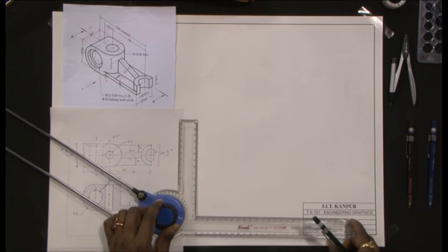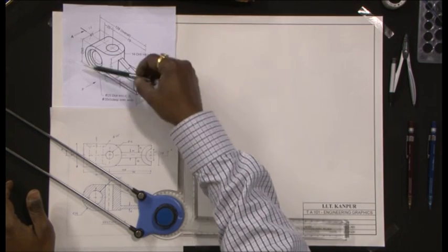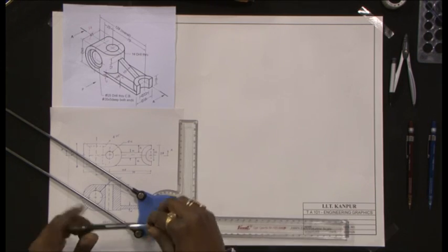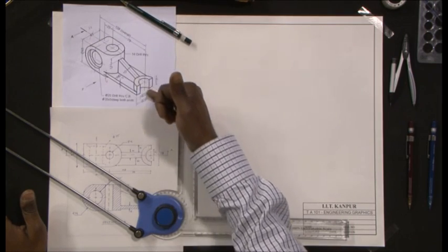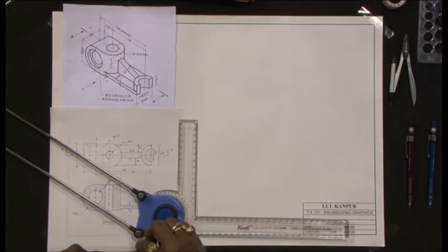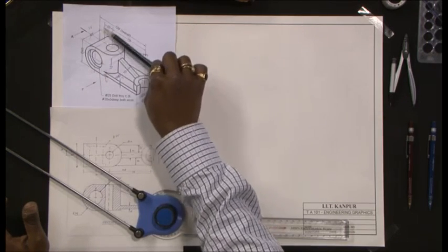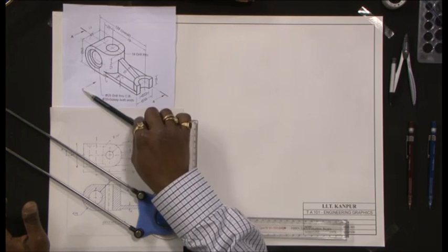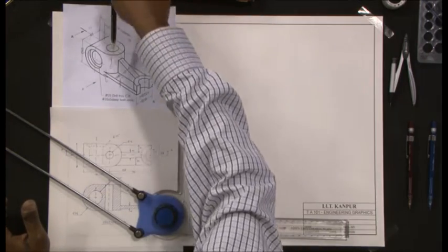This is an example on sections. What I have at the top is a solid and what I would want to do is section the solid using a vertical plane that passes through the center of the solid. I want to show this part of the solid in section and show that in the front view. The viewing direction is this, and of course I will be also drawing the top view.